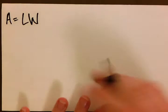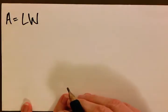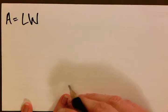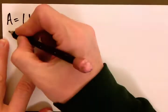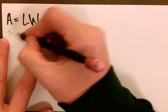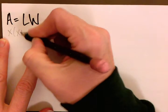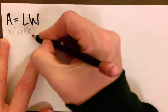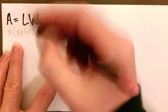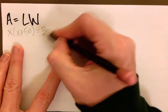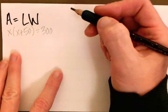So we know that the area of a rectangle, the formula for the area of a rectangle, is length times width. So we had length as x and width as x plus 50. So we're going to multiply those two together and it equals the area of 300. So that's where we'll start.